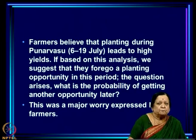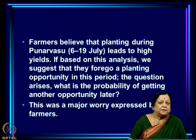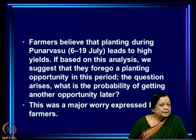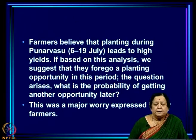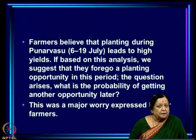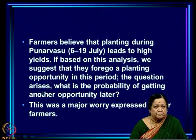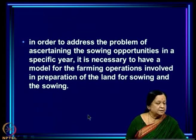This is a very valid question. Farmers believe that planting during Poonar Vasu, 6th to 19th July, leads to high yields. If based on this analysis we suggest they forego a planting opportunity in this period and wait for Pusha beginning 20th July, they ask: what is the probability of getting another opportunity? This is a major worry — if they forego an earlier opportunity and a later one does not arise, they will have lost the whole crop trying to get maximum yield.